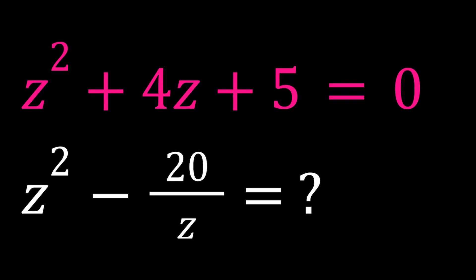Hello everyone. In this video, we're going to be evaluating an algebraic expression. We're given that z squared plus 4z plus 5 is equal to 0, and we're supposed to evaluate z squared minus 20 over z.